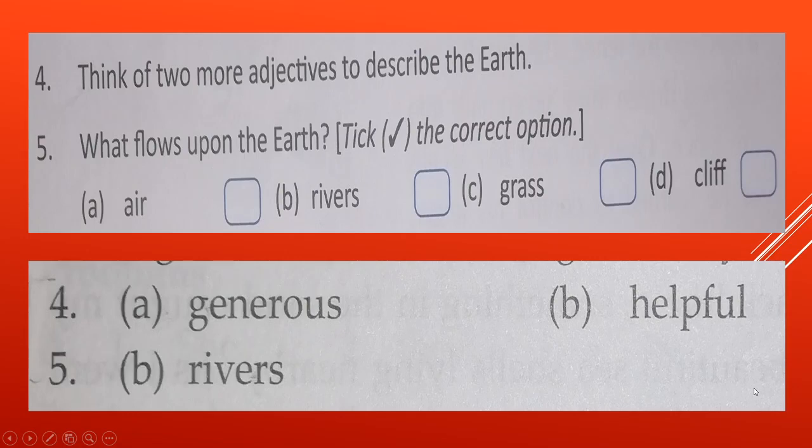Now fifth is, what flows upon the earth? Upon the earth, what flows? Air, rivers, or grass? So river. River flows upon the earth.